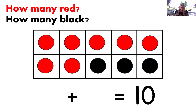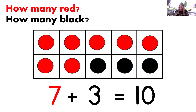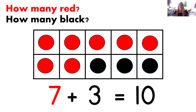How many dots are red now? That's right, seven. And how many are black? Three. Let's read that equation: seven plus three equals 10. Wonderful.